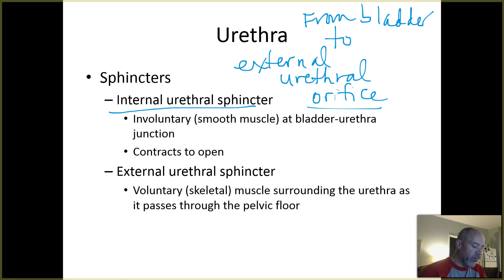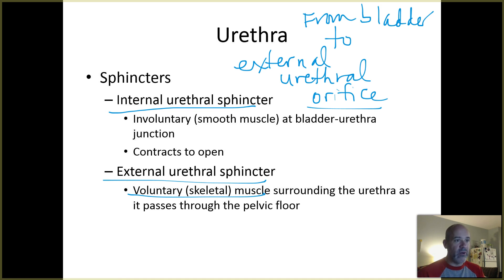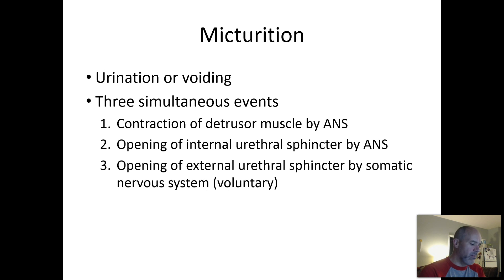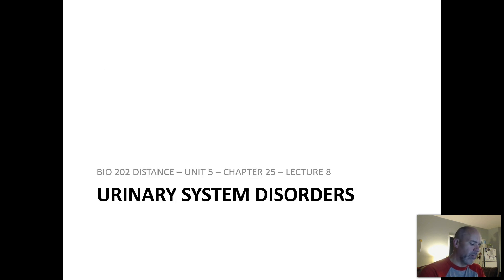The external urethral sphincter is under voluntary control and is controlled by your somatic nervous system. It is located right at the point where the urethra passes through the muscles of the pelvic floor. When you are ready to urinate, you voluntarily allow that external urethral sphincter to relax.